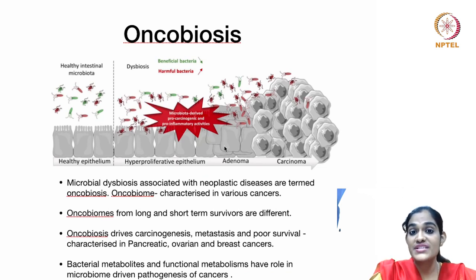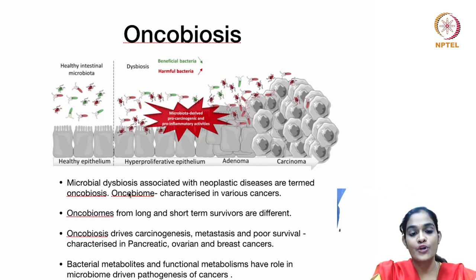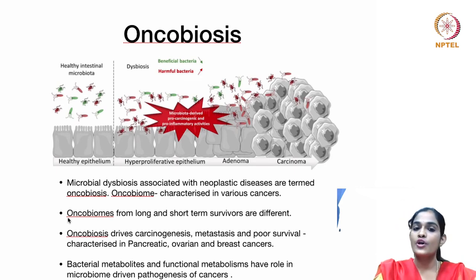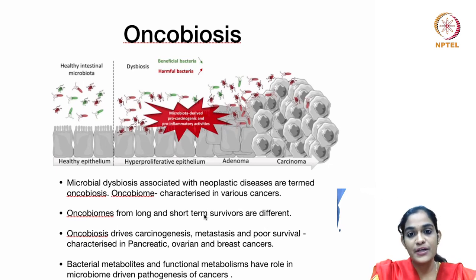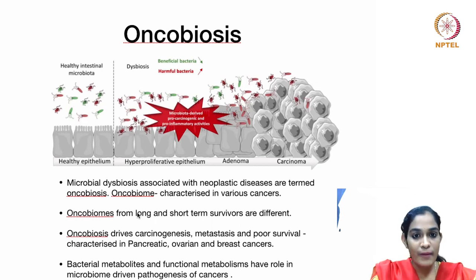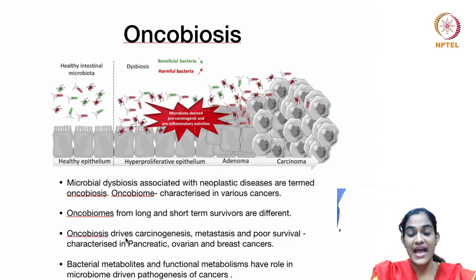Oncobiosis refers to microbial dysbiosis associated with neoplastic disease. The oncobiome comprises the microorganisms characterized in various cancers. Oncobiomes from long-term and short-term survivors are different, and in experimental animal tumor models, transfer of oncobiome from long-term survivors induced prolonged survival. Oncobiosis drives carcinogenesis, metastasis, and poor survival, well characterized in pancreatic, ovarian, breast, and oral cancers. Bacterial metabolites and functional metabolisms have a role in microbiome-driven pathogenesis of cancers.